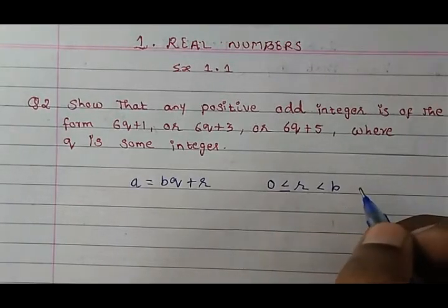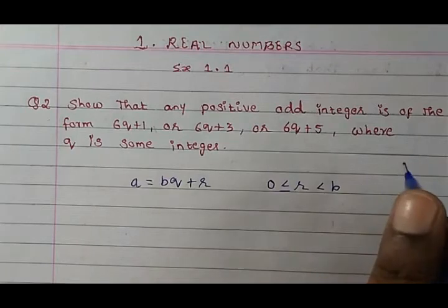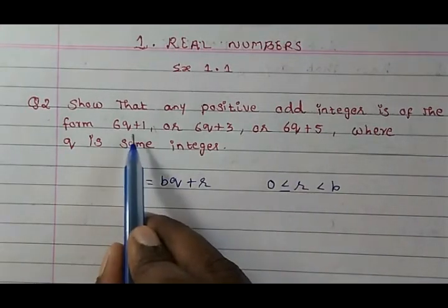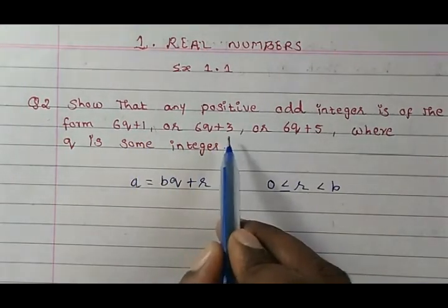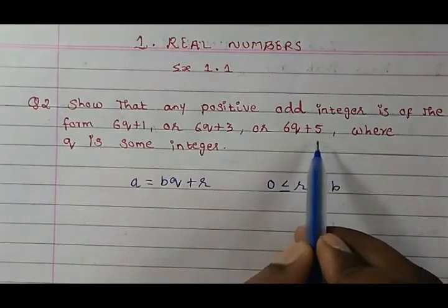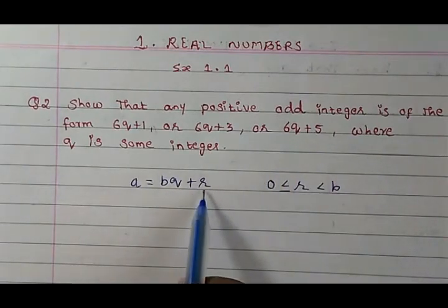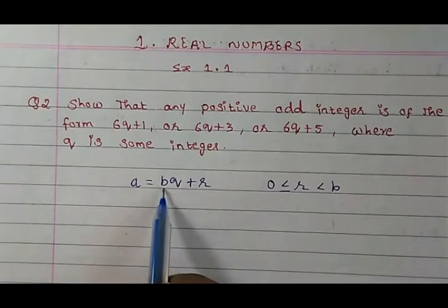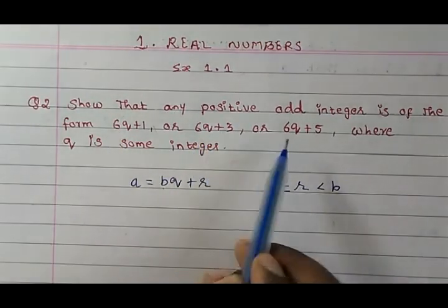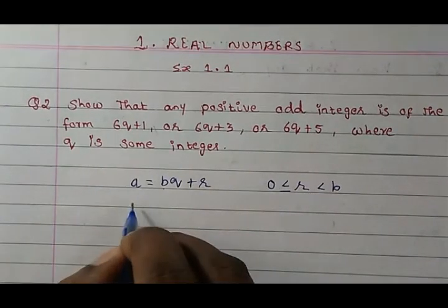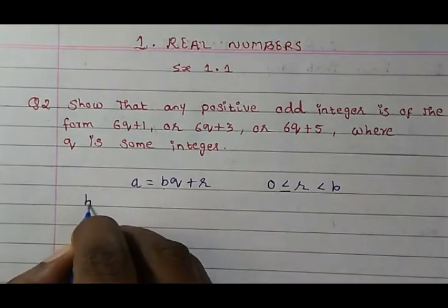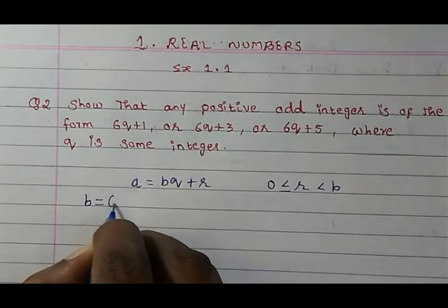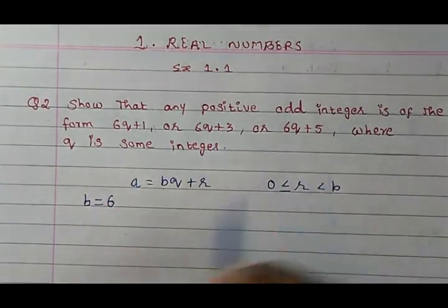Now just look at the question carefully students. It's given to us 6q+1, 6q+3, 6q+5. Just look at this equation bq+r. Can you see something similar there? Yes. In the place of b, 6 is given right. So we will write down b = 6 because it is given to us.